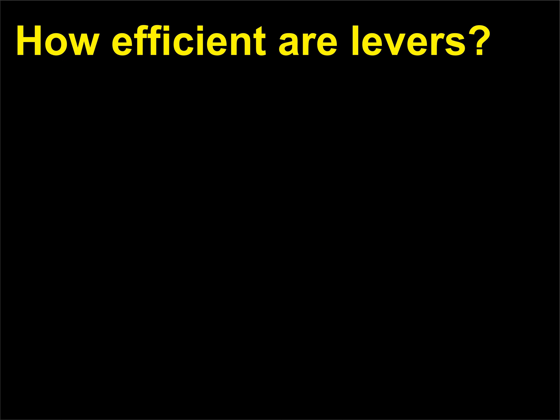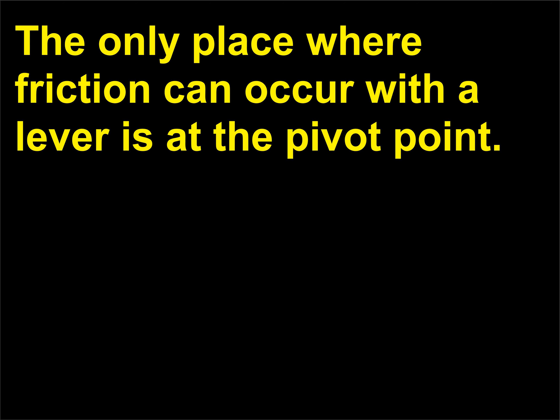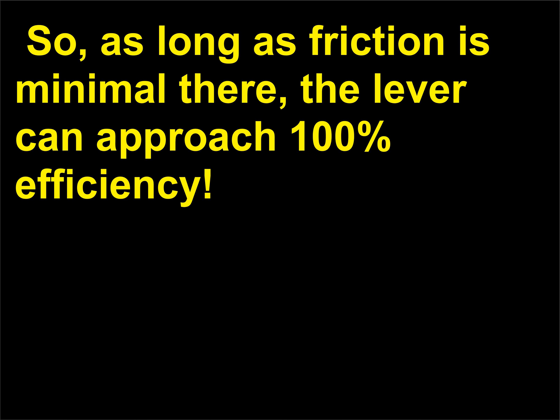How efficient are levers? The only place where friction can occur with a lever is at the pivot point. So, as long as friction is minimal there, the lever can approach 100% efficiency.